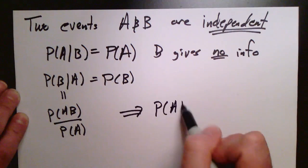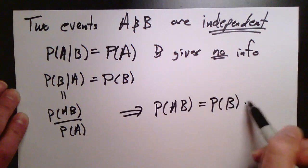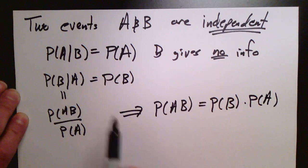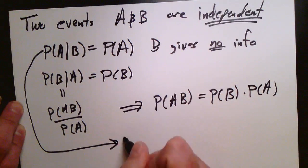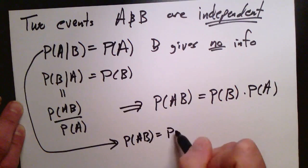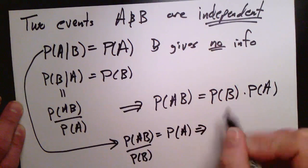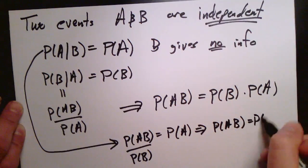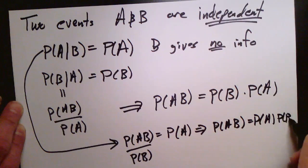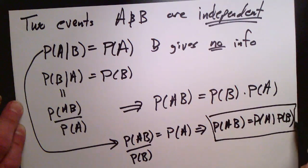And if we write out the definition, we see we can rewrite this as the probability of both A and B happening is just the product of the probability of A times the probability of B. And similarly, if we start from the first one, that's the probability of A and B happening is, again, just the probability of A and the probability of B. So we see that these relationships are symmetric.